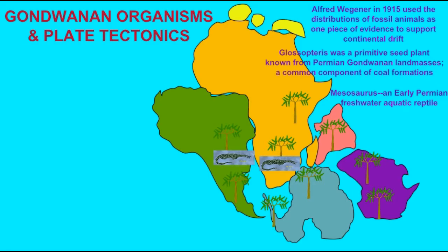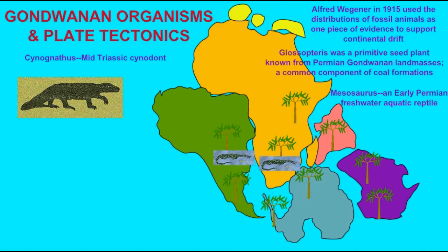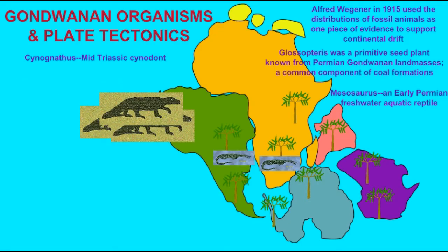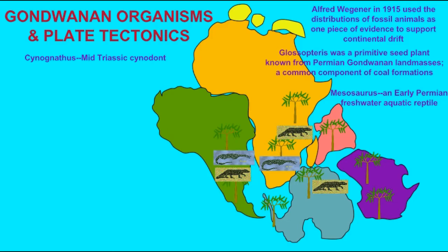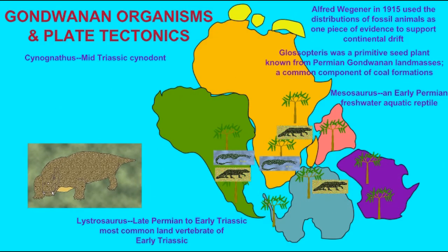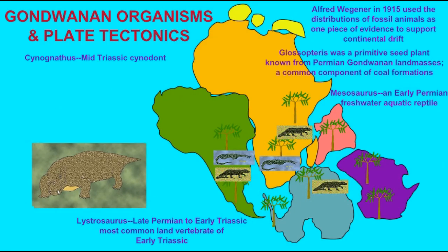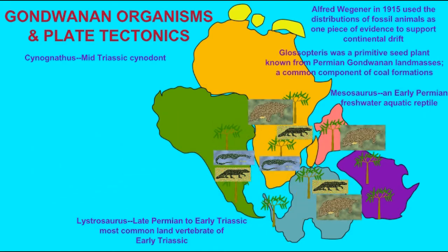A small freshwater reptile was known from both South America and Africa that would not have been predicted to have crossed an ocean. The synapsid reptiles were known dispersed along southern continents, such as the cynodont Cynognathus. The therapsid Lystrosaurus is not only known from diverse southern land masses, but northern ones as well, suggesting that there was once a supercontinent joining all land masses, given that Lystrosaurus is the most common land vertebrate from the early Triassic.